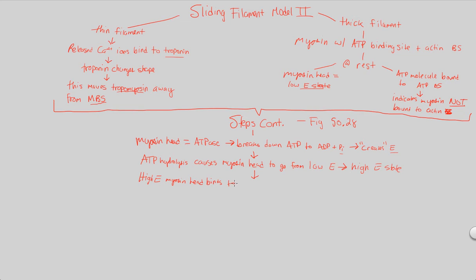High energy myosin head binds to the myosin binding site. Specifically, the open MBS, because of everything that happened at the thin filament, to the open MBS on actin. Remember, the actin is of course the thin filament.